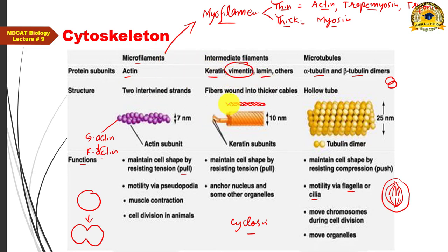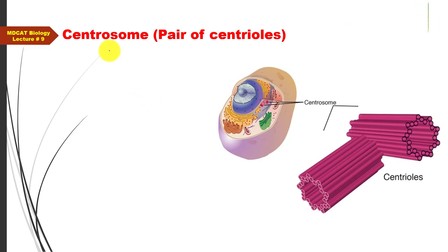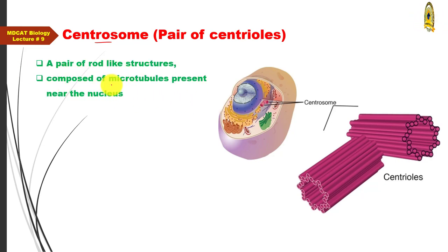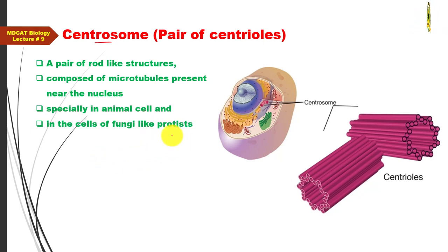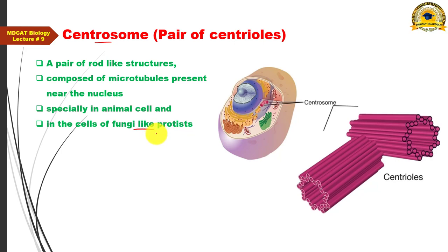Cytoskeletal fibers are a hot topic for MCQs since there is considerable information here. Now let us discuss centrosomes — or what we call a pair of centrioles. The term 'centrosome' is used for a pair of centrioles. These are rod-shaped structures made of microtubules, found only in animal cells near the nucleus, and in some fungus-like protists such as slime molds and water molds.